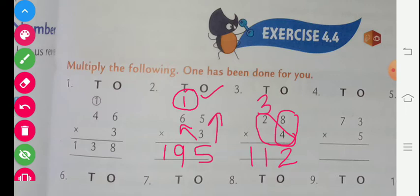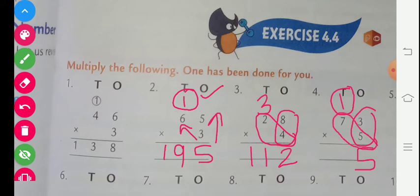Question number 4. First we multiply 5 with 3: 3 fives are 15. We write 5 here and 1 carry. Keep the carry in your mind — no need to write it in your book if you are able. Now we multiply 7 with 5: 7 fives are 35, plus 1 carry is 36. The answer will be 365.